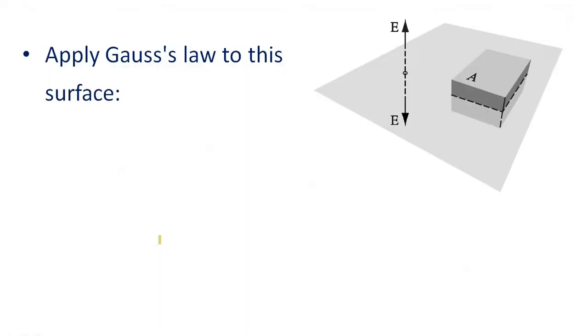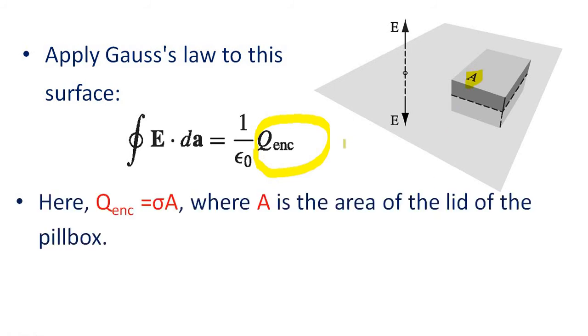Apply Gauss's law to this surface. We have Gauss's law: closed integral E dot dA equal to 1 by epsilon 0 Q enclosed. Now we need to find Q enclosed. We know for Gaussian surface, the surface area is given as A. The surface area is A and the charge density is sigma.